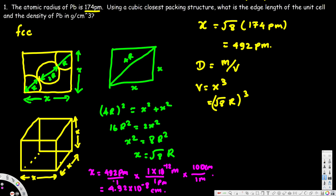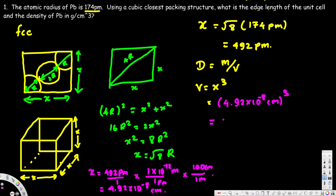Now we want to find the volume, so we cube this value. We can directly cube x = 4.92 × 10⁻⁸ cm. Cubing this gives us (4.92 × 10⁻⁸)³ = 1.191 × 10⁻²² centimeters cubed. So this is our volume.